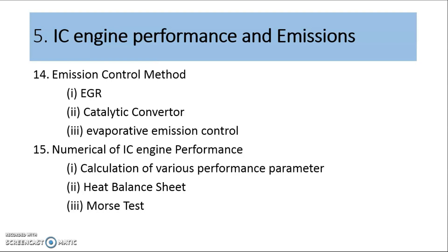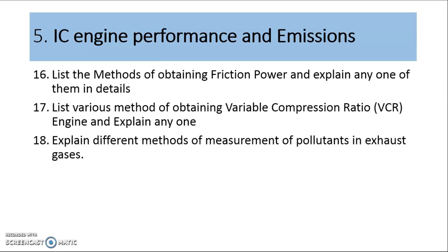The second type of numerical is to prepare the heat balance sheet from the given data, and the third is a numerical based on the Morse test. In this unit there are also various emission control methods, out of which two are most important: exhaust gas recirculation and catalytic converter.